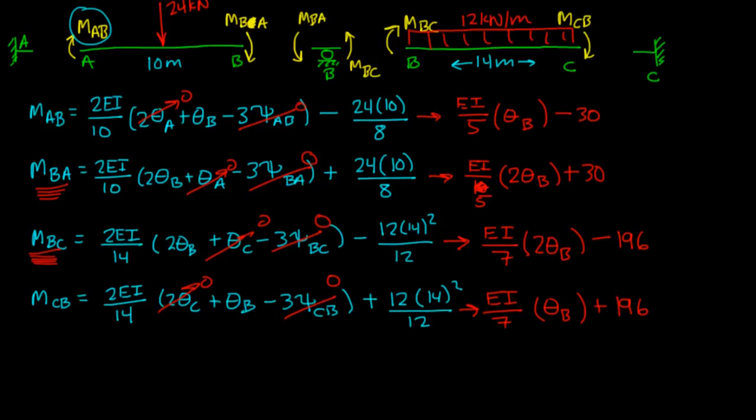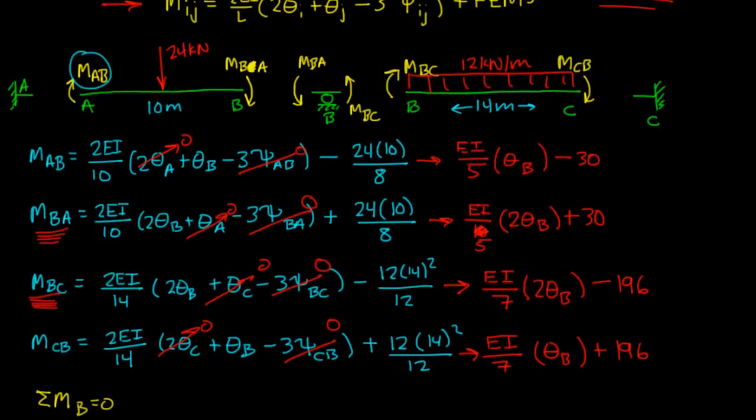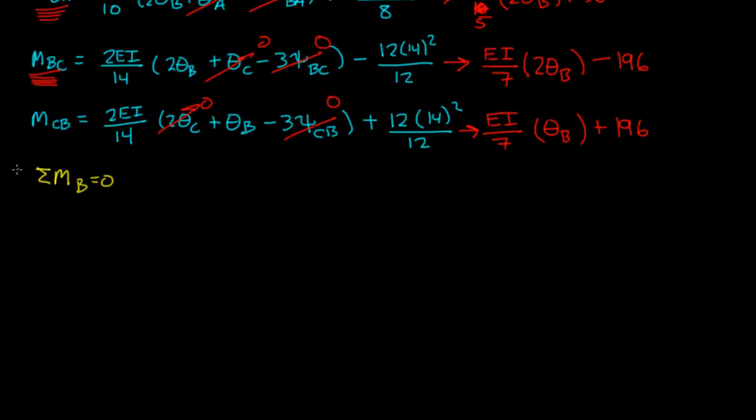So if I said the summation, or let me do this in yellow, the summation of moments around joint B is equal to 0. Let's see, which way are those moments going at joint B? Well, they're going counterclockwise, so we'll just say counterclockwise is positive. You have MBA plus MBC is equal to 0.